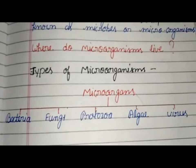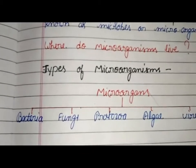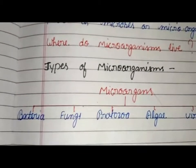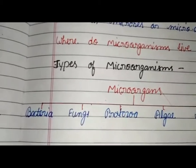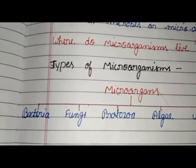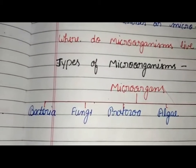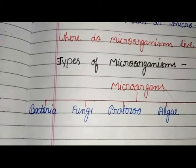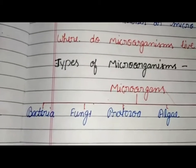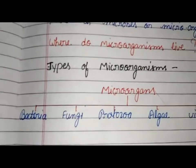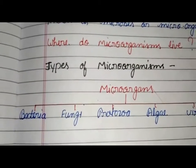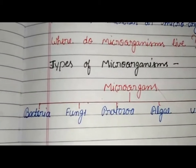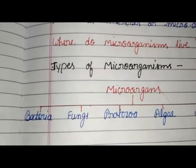First of all, we will discuss about bacteria. Bacteria are the most abundant, simplest, and smallest unicellular microscopic organisms. Anthony van Leeuwenhoek discovered bacteria with the help of a microscope.